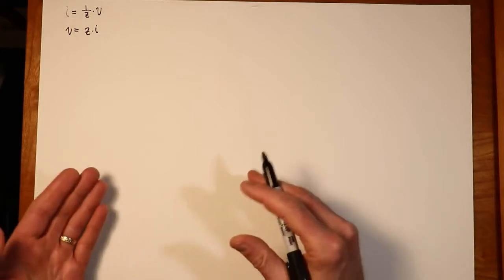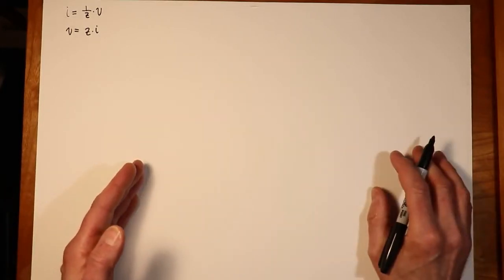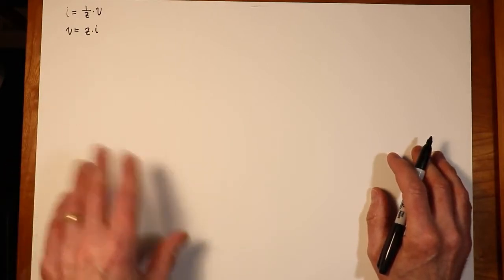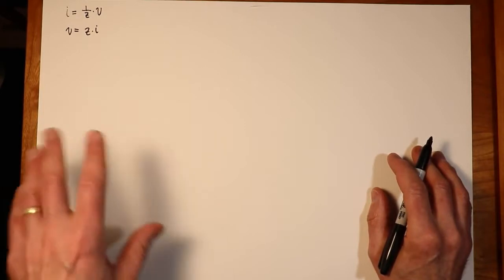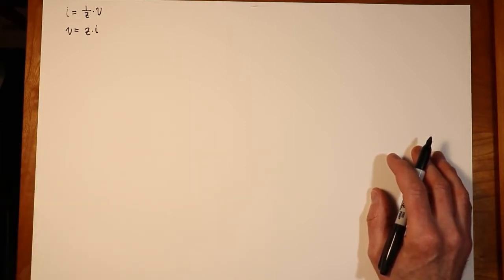The downside is we're getting currents and we're getting mesh currents, not branch currents, and we'll define the difference in a moment. So that's not quite as convenient as nodal, which gives us really what we usually want, which are voltages.